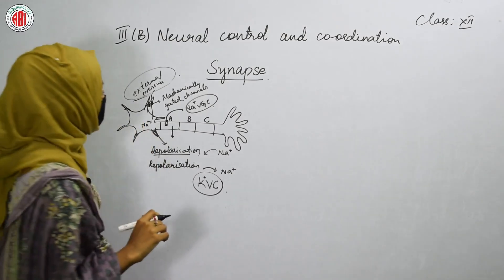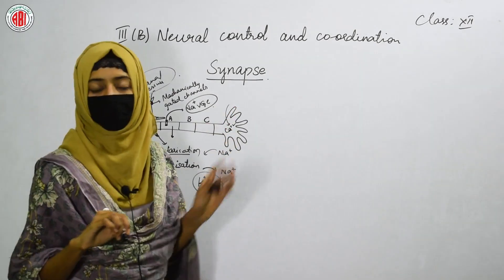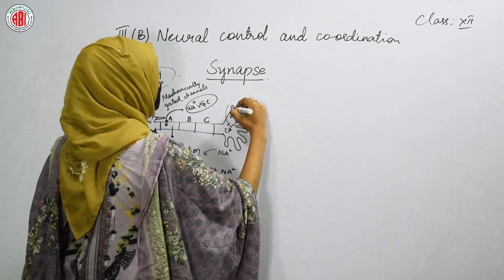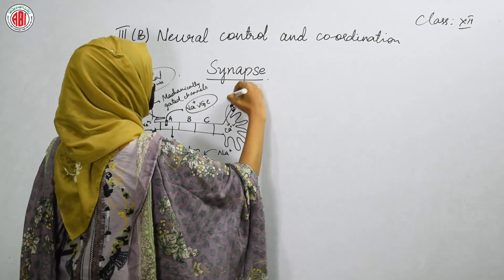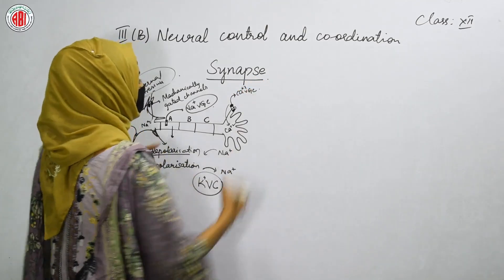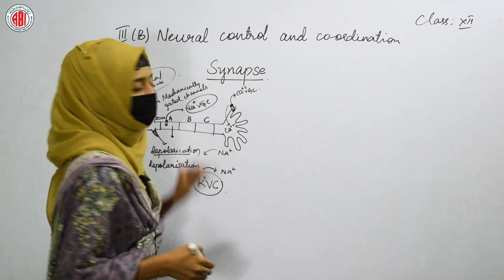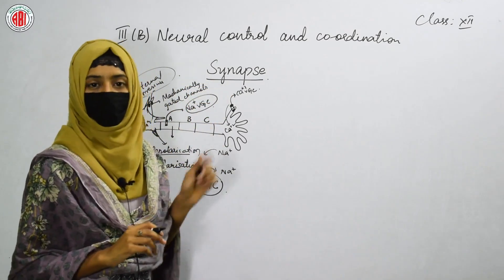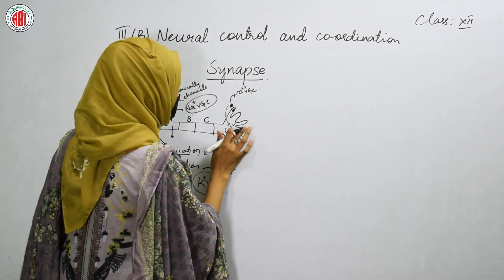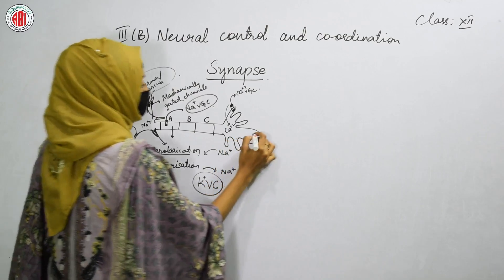Ultimately, this leads to the entry of calcium ions in the axon terminals. Some channels are present there called calcium voltage-gated channels. Due to the opening of these channels, calcium can easily enter into the axon terminals, and due to the entry of calcium, the synaptic vesicles found in the axon terminals get stimulated. The synaptic vesicles are present inside the axon terminal and inside them chemicals are found.